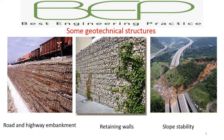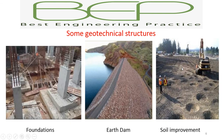Here are some examples of geotechnical structures. Here we have a road and highway embankment, here we have a retaining structure, here we have slope stability — you can see here that we have a landslide, so how to mitigate this kind of phenomenon. Here we have foundations, earth dams, and soil improvement to achieve better characteristics of soil.